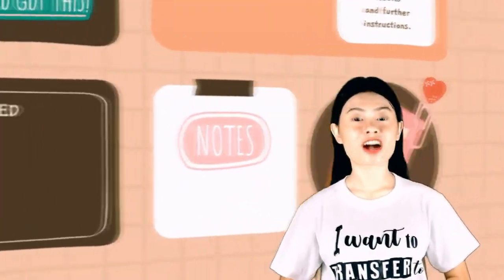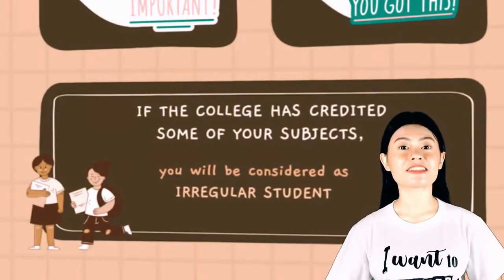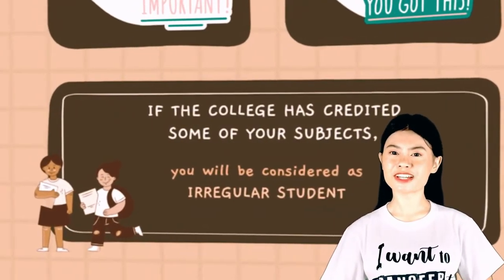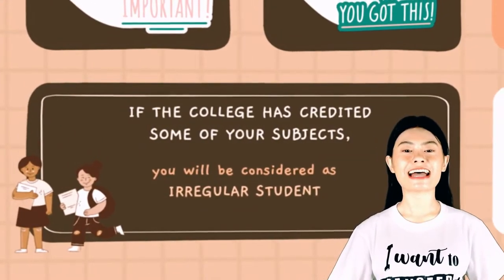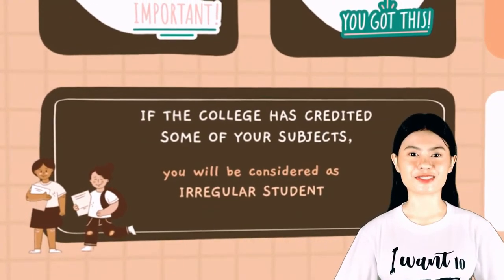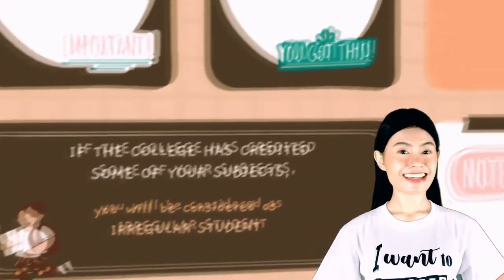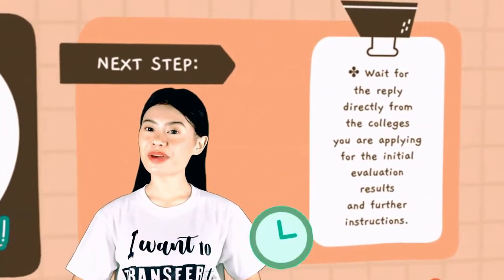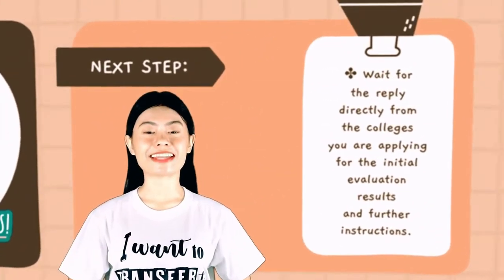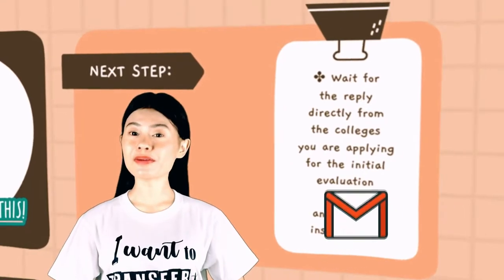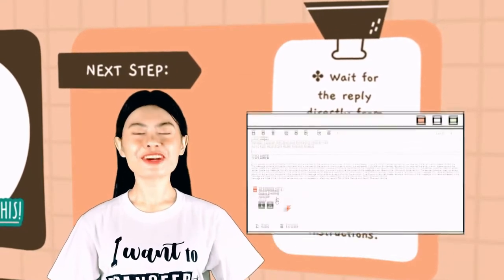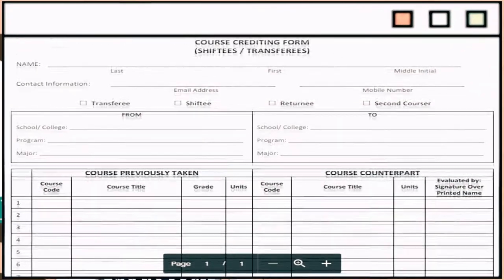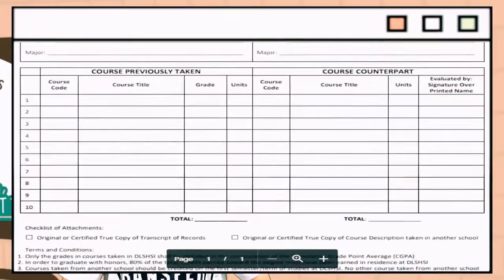Please take note that if the college has credited some of your subjects, then you will be considered an irregular student. Afterwards, you just have to wait for the reply directly from the colleges you are applying to for the initial evaluation results and further instructions.